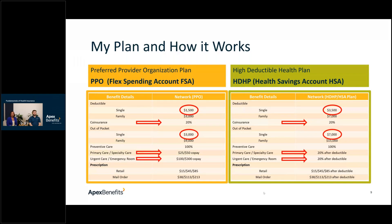On the PPO plan, copays appear directly on the plan document. On the High Deductible Health Plan there's an important caveat: you must reach your $3,500 deductible before copays or coinsurance kick in.